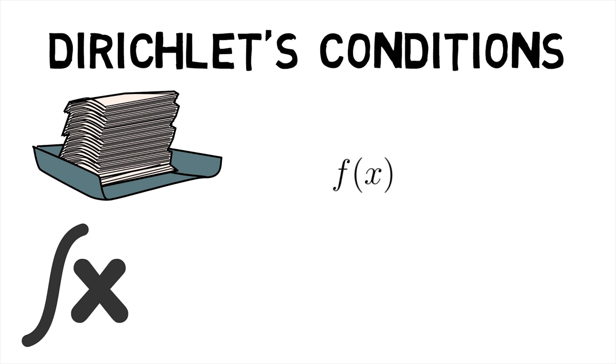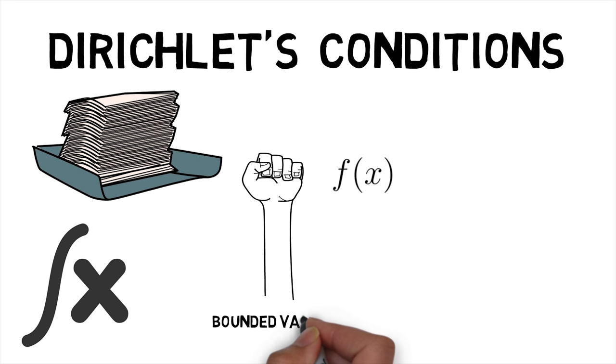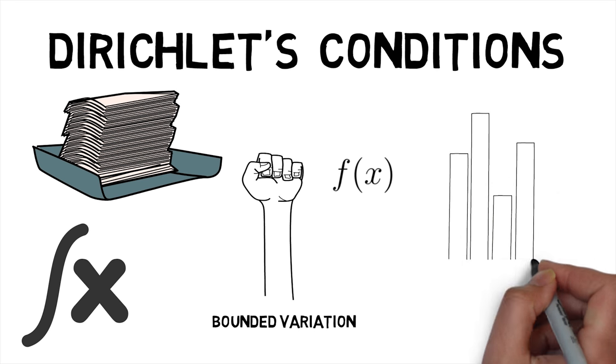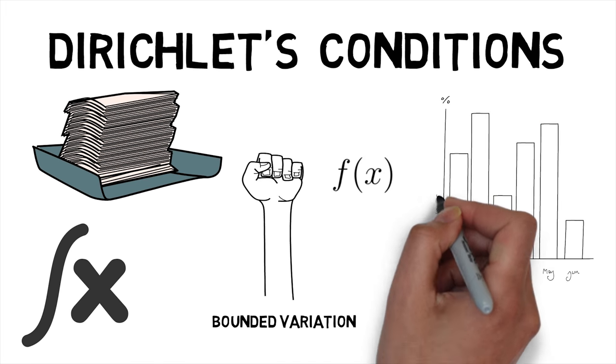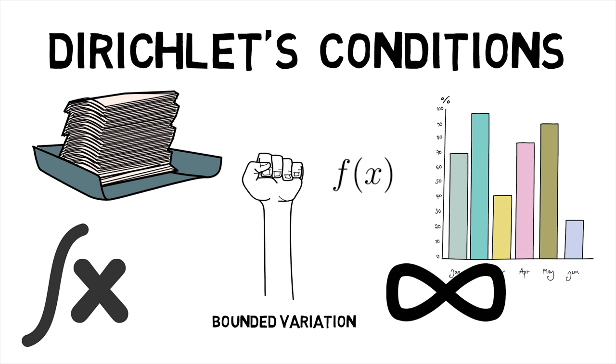The conditions are: first, f must be absolutely integrable over a period; second, f must be of bounded variation in any given bounded interval; and finally, f must have a finite number of discontinuities in any given bounded interval, and the discontinuities cannot be infinite.